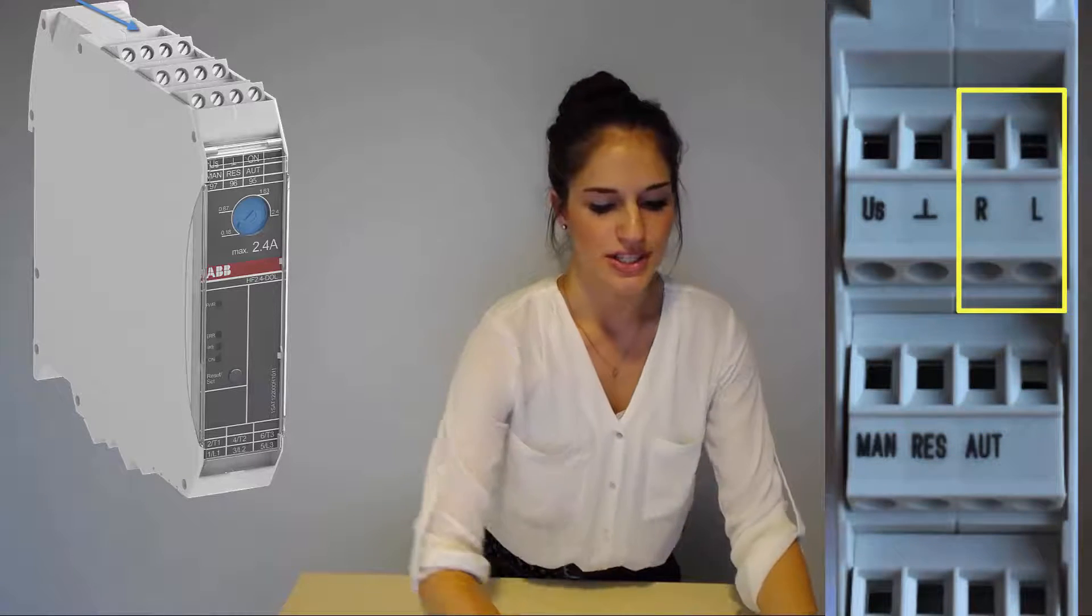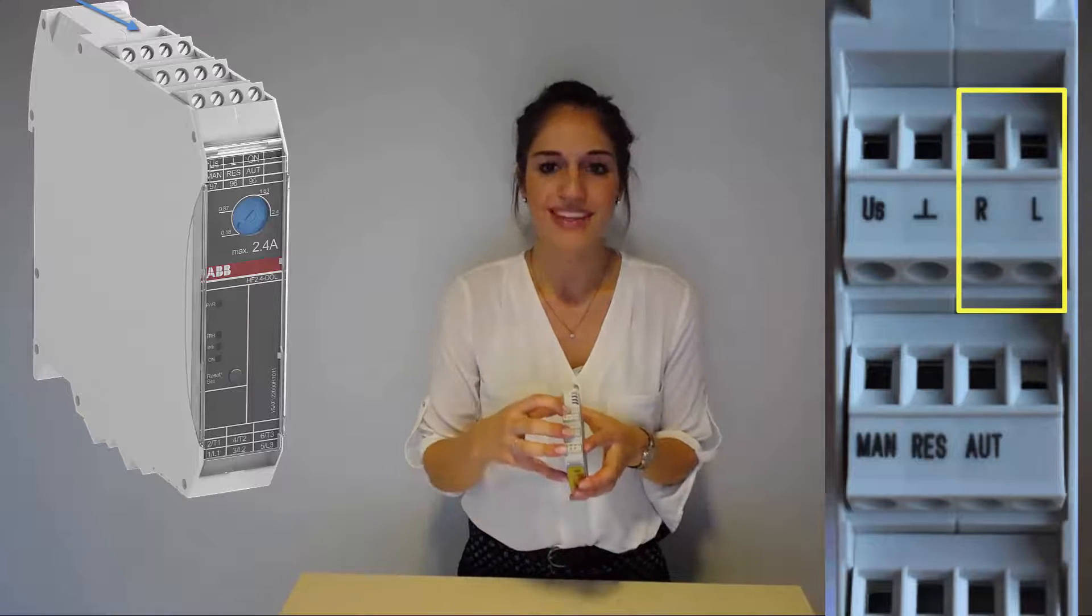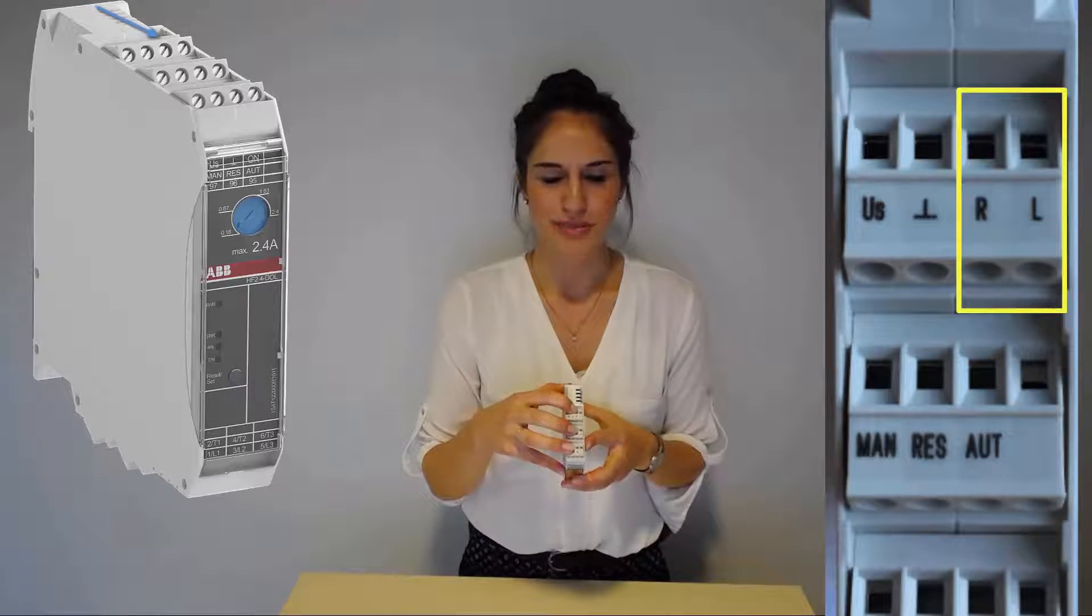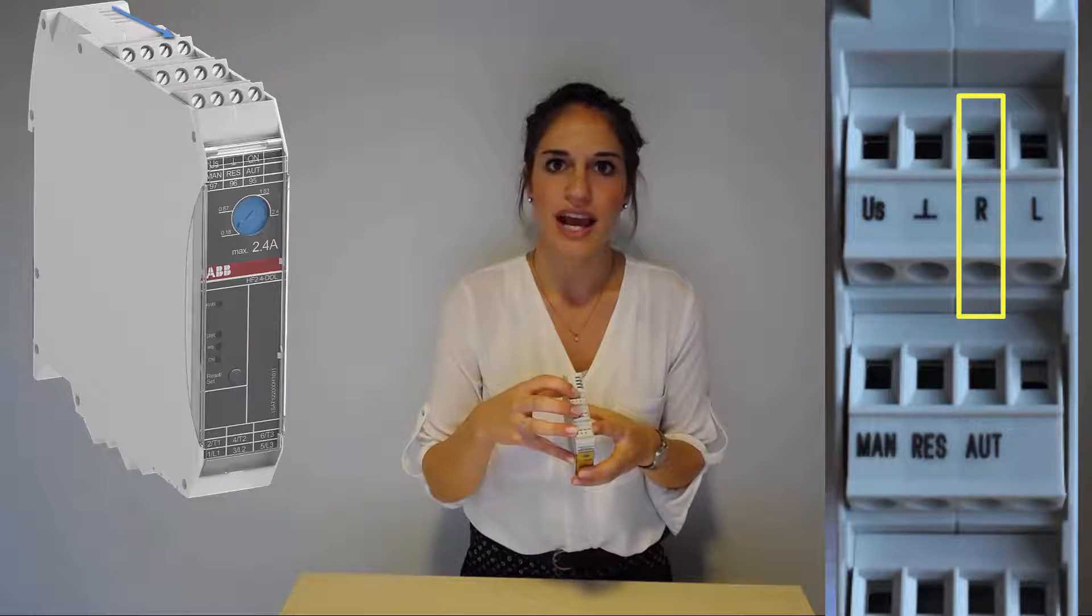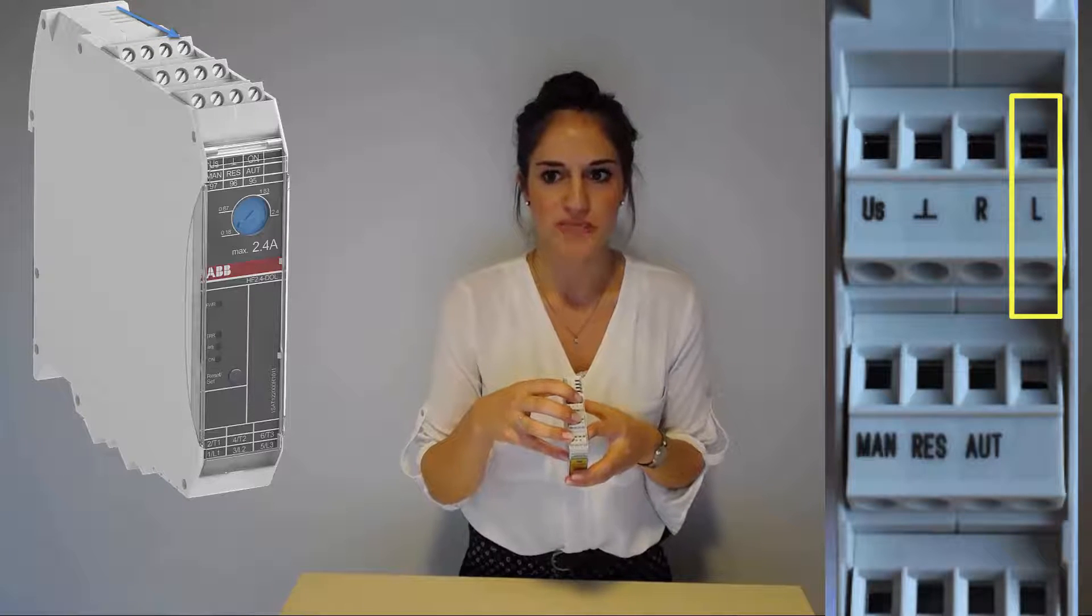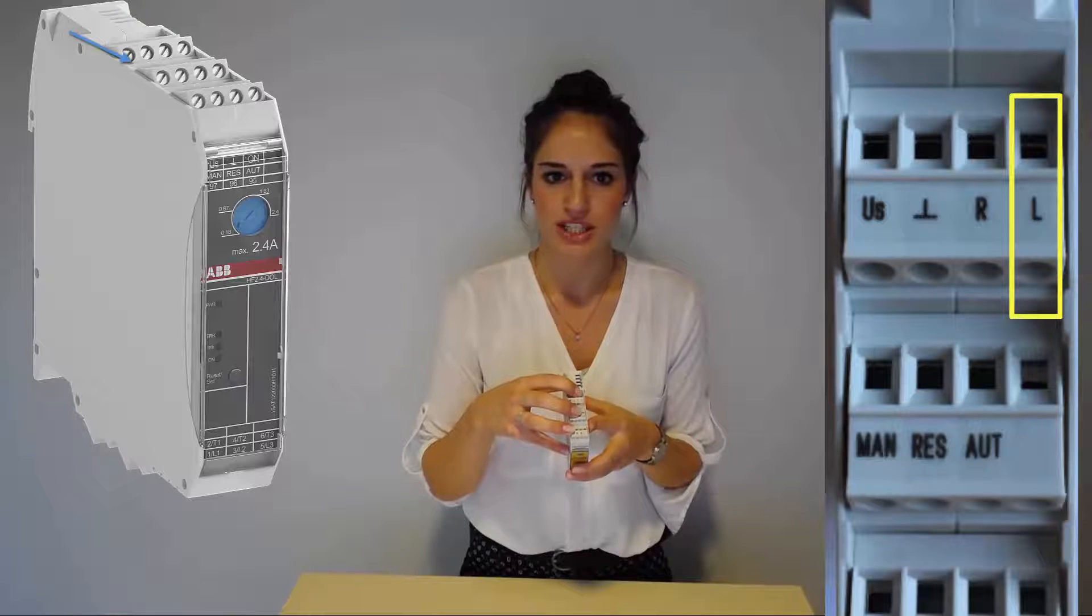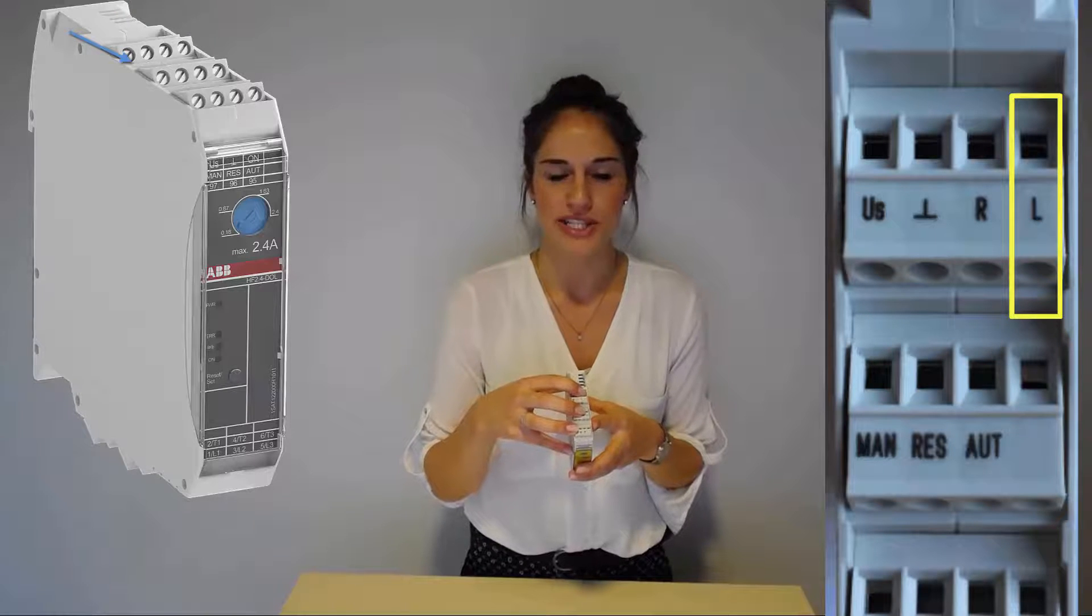For reversing starters, there are two control input terminals. The R terminal is for forward operation and the L terminal is for the reversing mode. They have to be connected with switches and the 24V DC power supply as well.